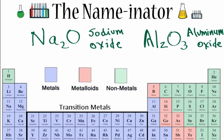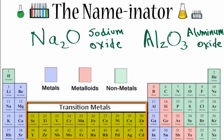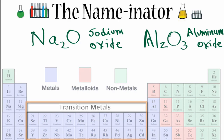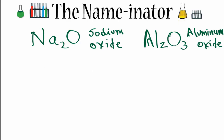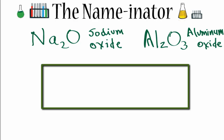One thing to note, though, is if you have transition metals — those metals in the center of the periodic table — you do need to add another step. But that's the subject of another video. To get good at this, you need to practice, and you can find that practice on my chemistry website using the link below. This is Dr. B, and thanks for watching.